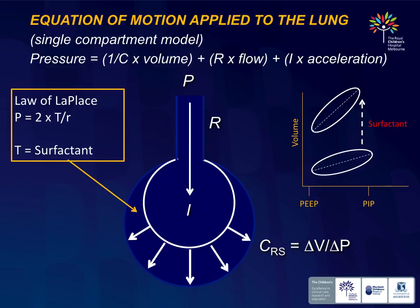Applying Newton's equation of motion to the lung — assuming a single compartment model, though the whole lung is actually a billion little alveoli trying to do different things — we need to apply enough pressure to overcome resistance and enough pressure to initiate a volume change related to compliance. We also need to factor in the law of Laplace, which relates to surface tension in the lung and will also dictate how easy it is for the system to be moved. That's all you need to know.